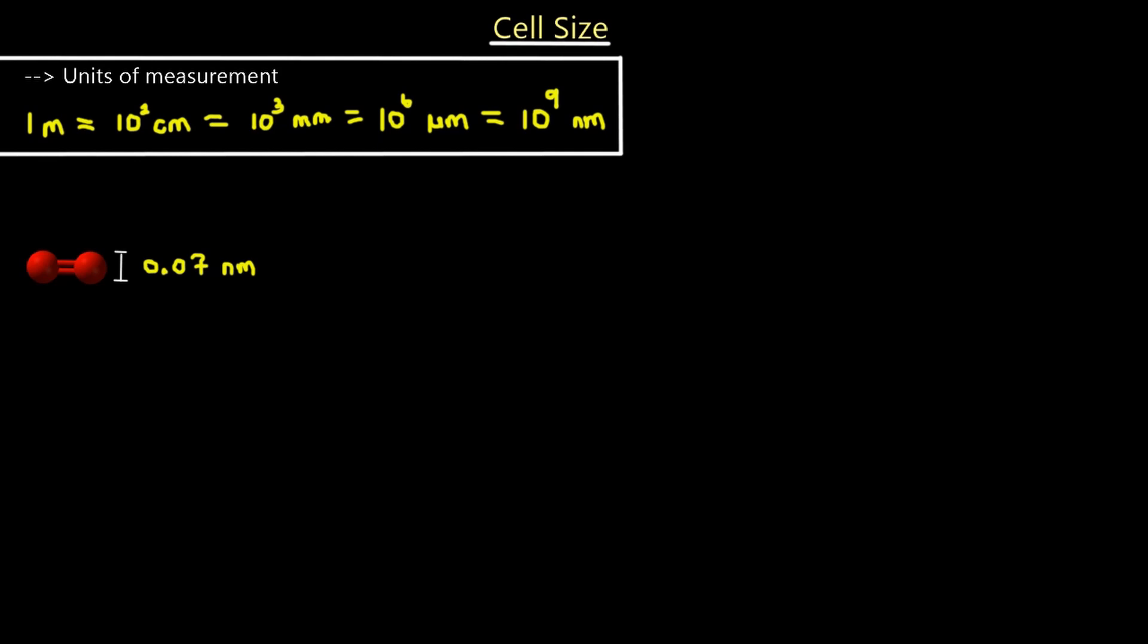We're going to begin with the smallest and go up to the largest units of a cell. First here we have two oxygen atoms double bonded, so this is O2, oxygen gas. The diameter of an oxygen atom is 0.07 nanometers. That's a billion, right—this is 0.07 of a billionth of a meter. Just imagine how tiny a 0.07 billionth of a meter is.